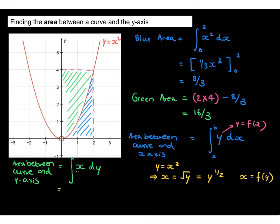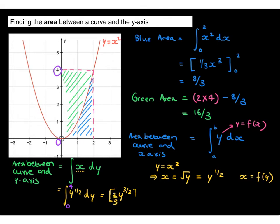We're rewriting it so x is equal to some function of y. We can now replace x with y to the power of a half and integrate with respect to y. Looking at the graph, we're integrating between 0 and 4 on the y-axis. Integrating y to the power of a half: raise the power by 1 to get 3 over 2, then divide by 3 over 2, which is the same as multiplying by 2 thirds. Substituting in the limits 0 and 4: the lower limit gives 0, and we have 2 thirds multiplied by 4 to the 3 over 2. Since 4 to the half is 2, and 2 cubed is 8, we get 8 times 2 thirds equals 16 over 3.